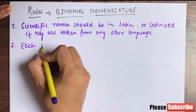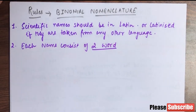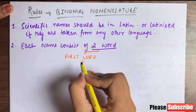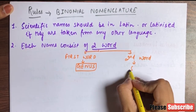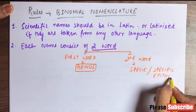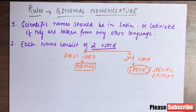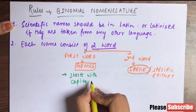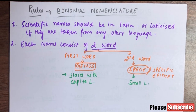The second rule is that each name consists of two words — that is what binomial means. The first word represents the genus and the second word represents the species, or the specific epithet. The genus always starts with a capital letter and the specific epithet always starts with a small letter.